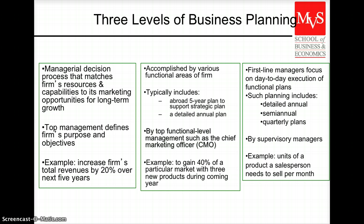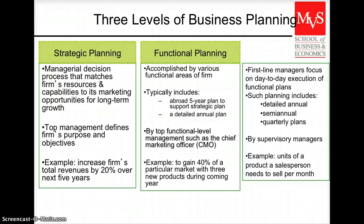Planning takes place at three different levels within the firm, or even more if the company has different business units. The first one that we will see in more detail takes place at the corporate level. It is called strategic planning and is driven by the senior management within the firm. Then each individual function or department develops one, and this is obviously where the marketing plan fits in. The marketing plan is defined by the CMO, the Chief Marketing Officer.